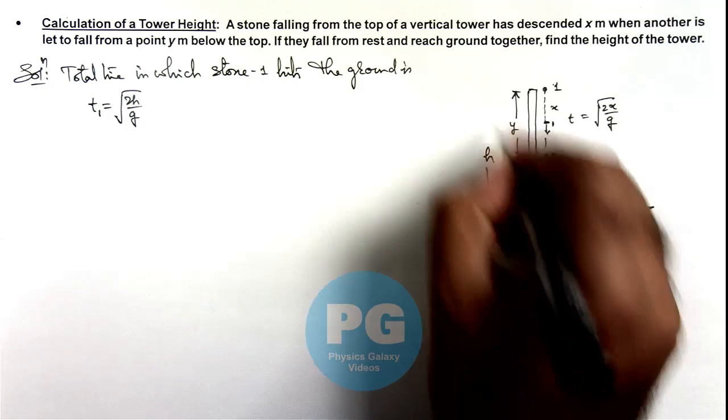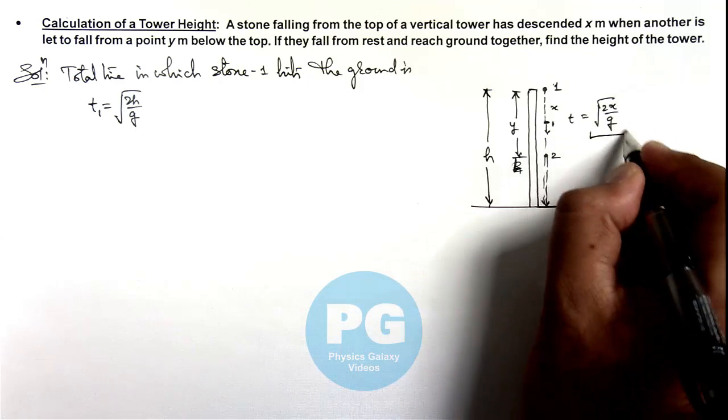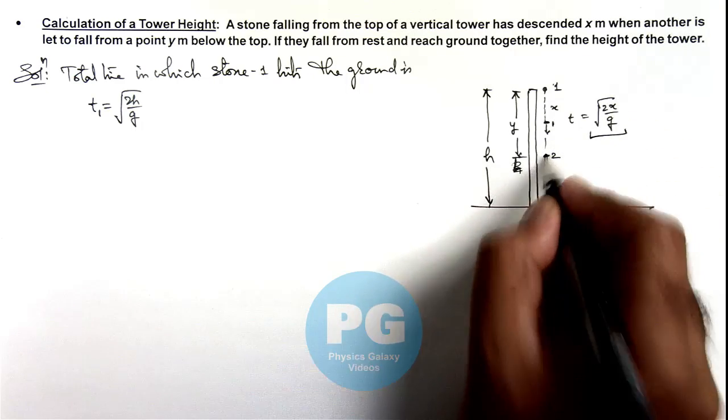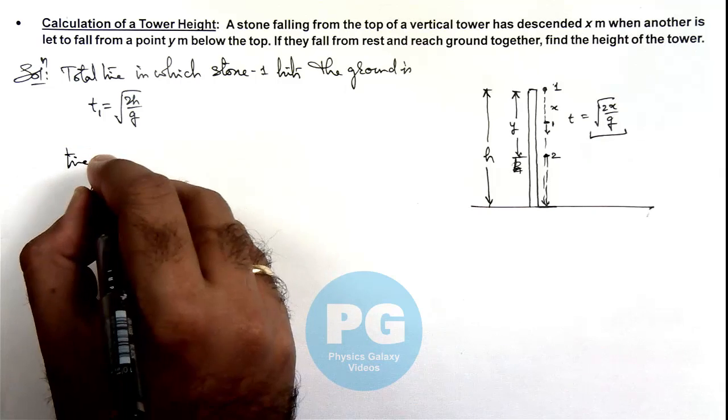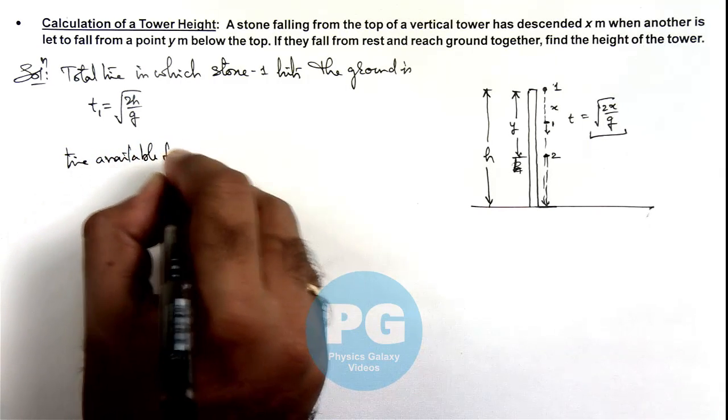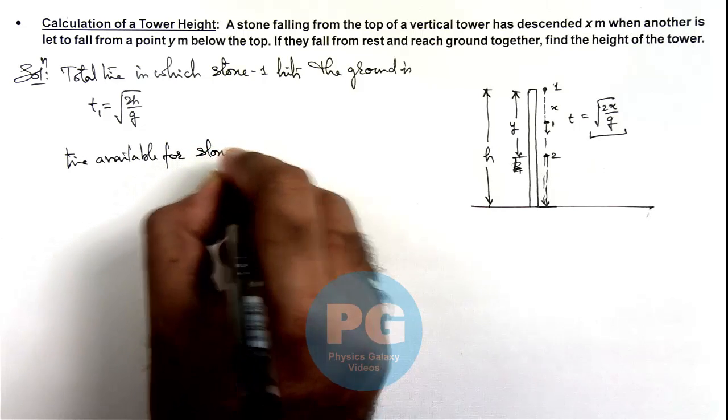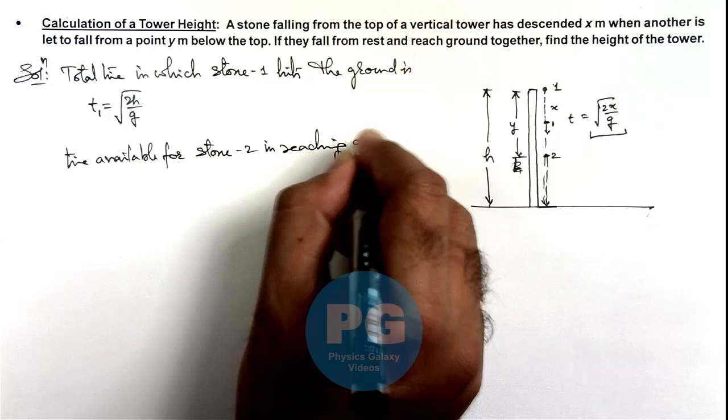This height h we can write separately. Out of this time root 2x by g is gone when stone 2 is dropped. So we can write time available for stone 2 in reaching ground is.